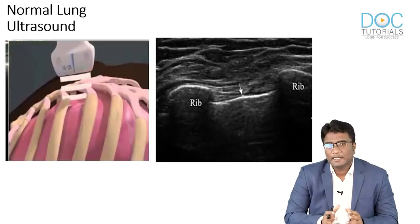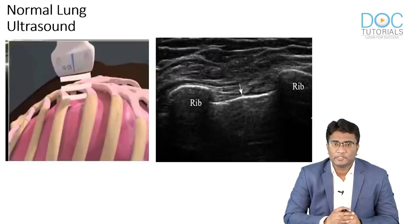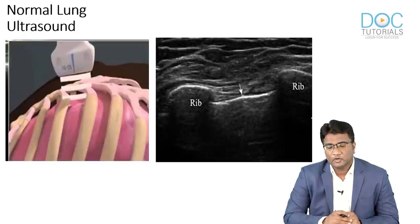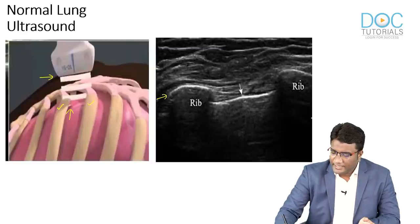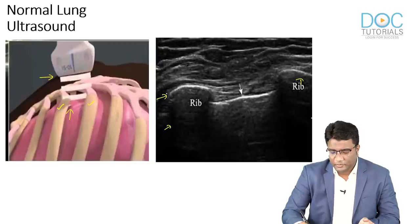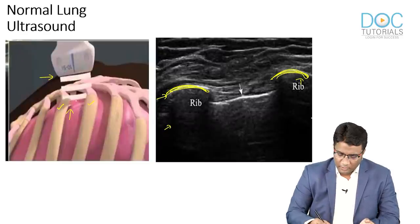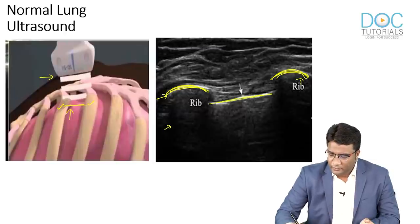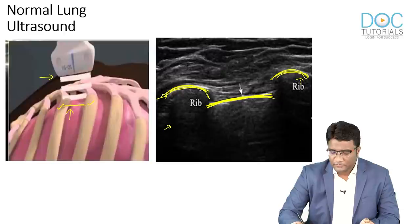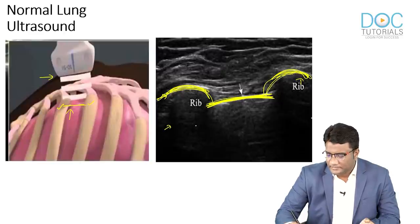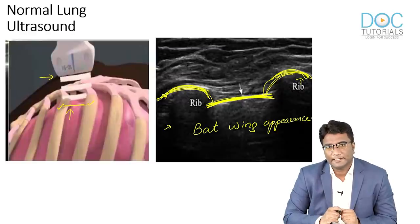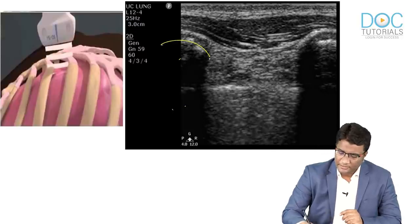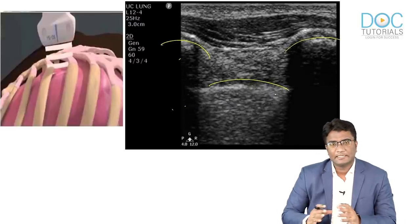In normal lung ultrasound, when you place the probe across the intercostal space, the two ribs form hyperechoic areas with posterior acoustic shadowing. You also see the pleural line — a white hyperechoic line. This appearance, because of the ribs and the pleural line, is called the batwing appearance. This is a normal finding. You can see the ribs, the pleural white line, and the batwing appearance in these normal lung ultrasound images.